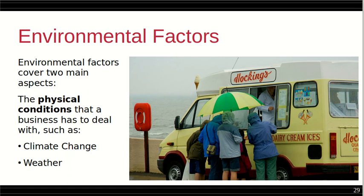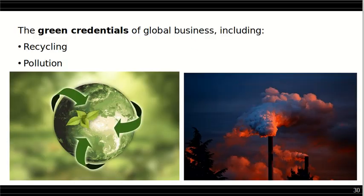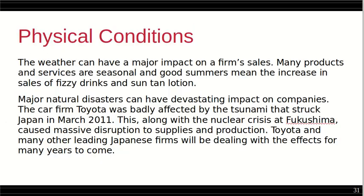Environmental factors cover two main aspects: the physical conditions that a business has to deal with, such as climate change and weather, and the green credentials of global businesses including recycling and pollution. The weather can have a major impact on a firm's sales — many products and services are seasonal, and good summers mean increased sales of fizzy drinks and suntan lotion. Major natural disasters can also have a devastating impact on companies. The car firm Toyota was badly affected by the tsunami that struck Japan in March 2011, which, along with the nuclear crisis at Fukushima, caused massive disruption to supplies and production.